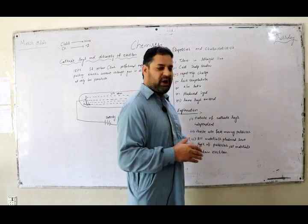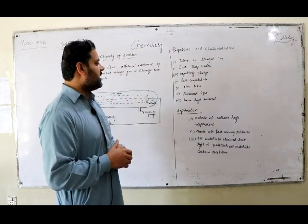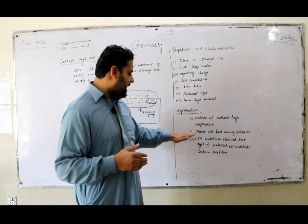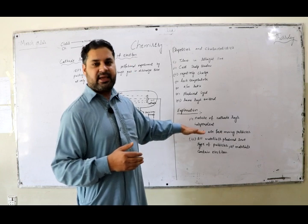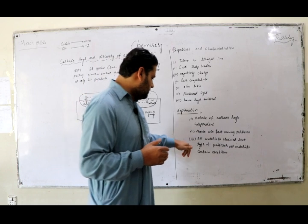Number 2: These are fast-moving particles. The characteristic that these rays cast a sharp shadow of an opaque object placed in their path indicates that these are not rays, but actually fast-moving particles.